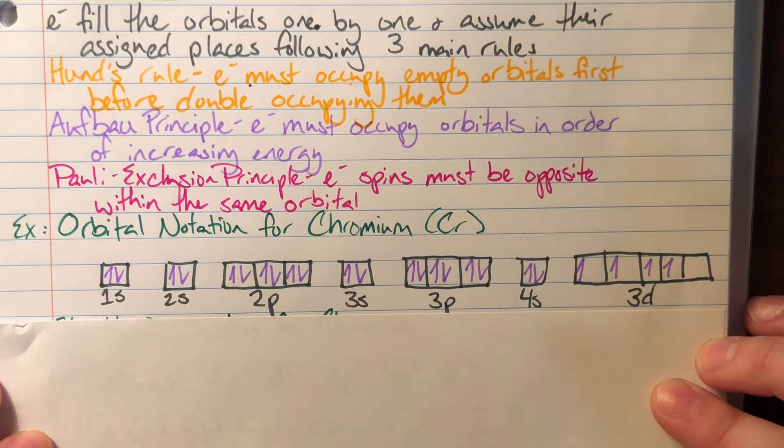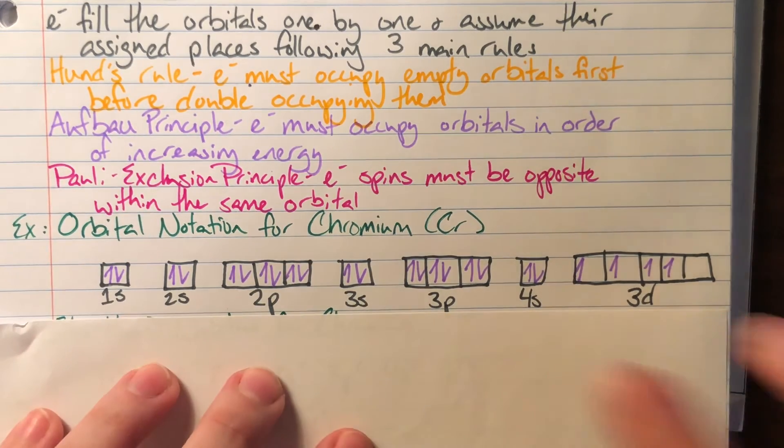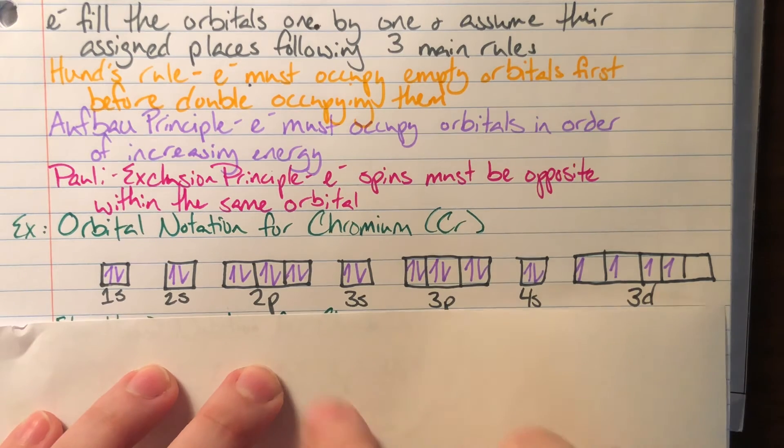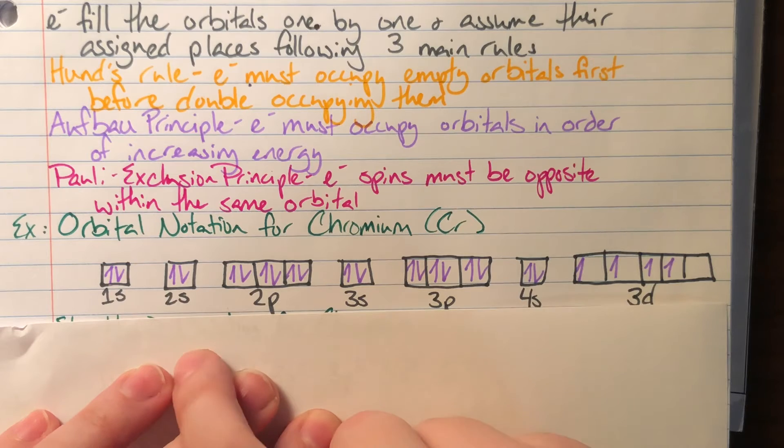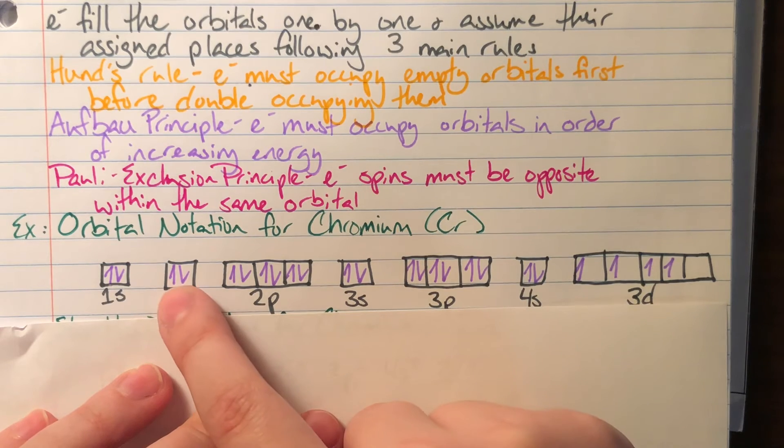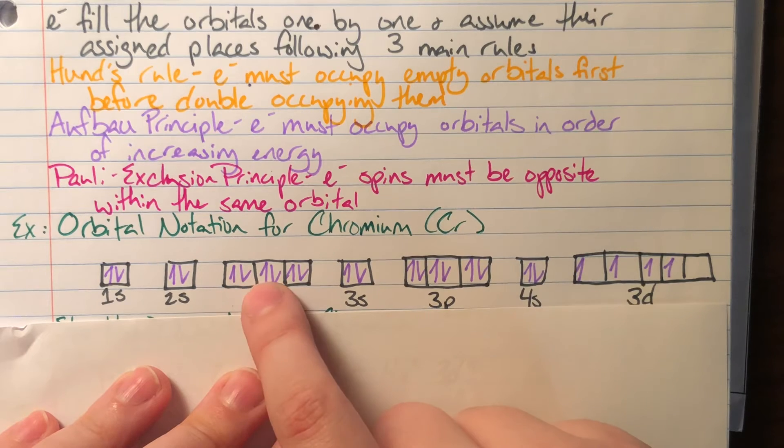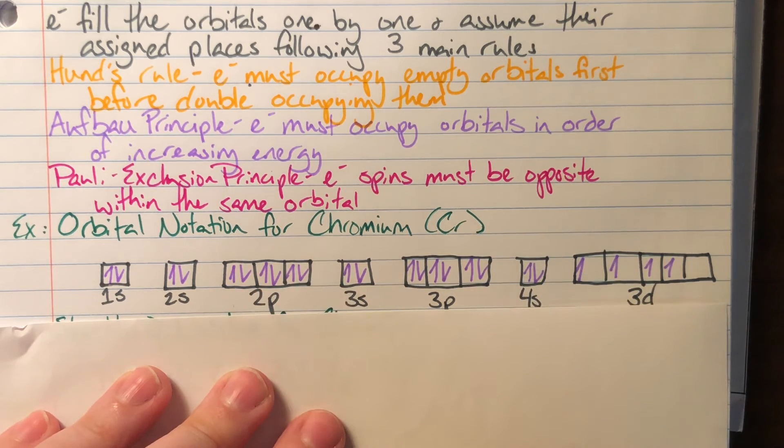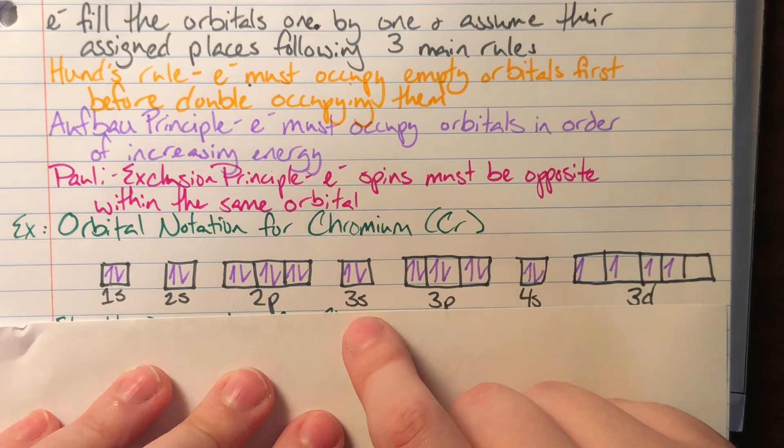Here we have the different suborbitals. I have each electron placed exactly where it's going to live. My first and second electron live inside of 1s. My third and fourth electron, 2s. My fifth, sixth, seventh, eighth, ninth, tenth electron live in 2p.